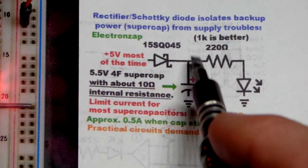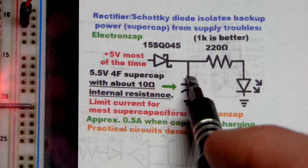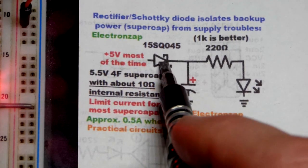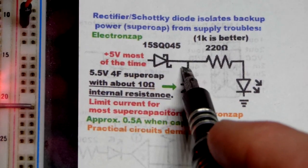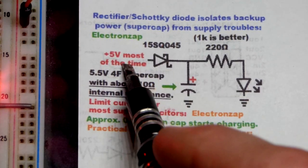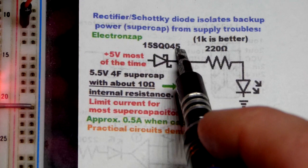Capacitor charges when power is applied. When it's lost for whatever reason, the super capacitor will not go back to the power supply because of the Schottky diode. So it's a rectifier diode basically, which means it lets current go one way but not the other. Up to 45 volts for this particular one.